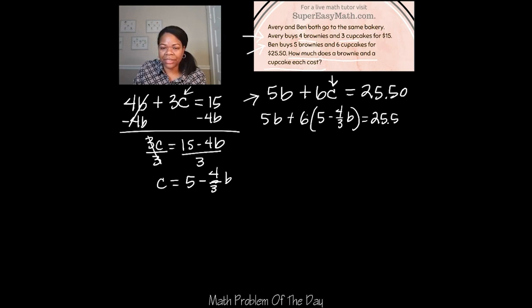Now subtract by 6 on both sides and I'm left with 3C equals 9. Then I divide by 3 on both sides because I'm trying to get that C by itself and I get C equals 3. So what does that mean as far as the cupcakes go? It means the cupcakes cost three dollars.